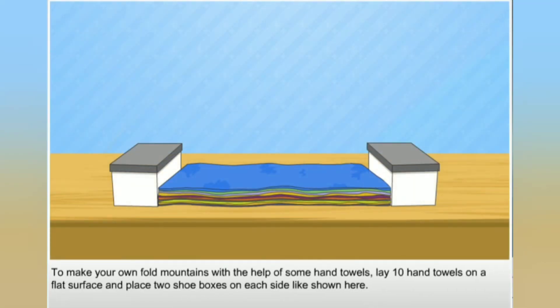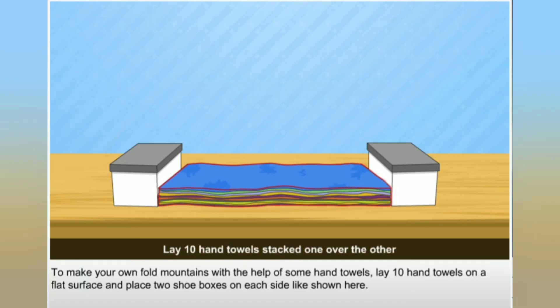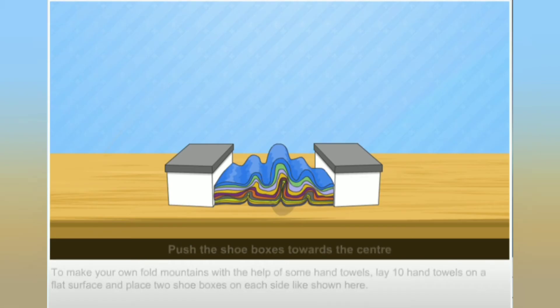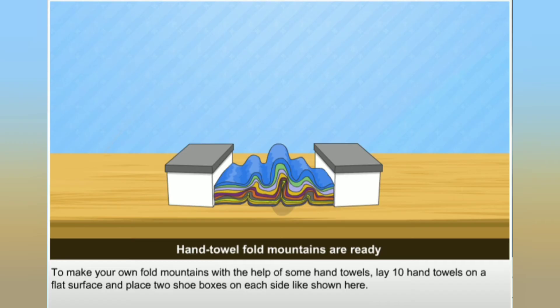To make your own fold mountains, with the help of some hand towels, lay 10 hand towels on a flat surface and place two shoe boxes on each side. Push the shoe boxes towards the center. This activity shows us how fold mountains are formed when forces move towards a common center.